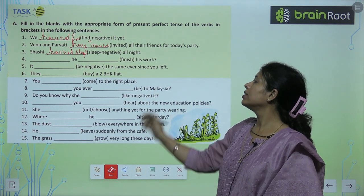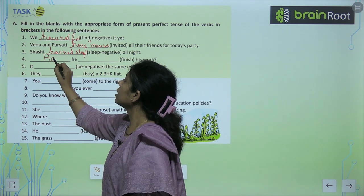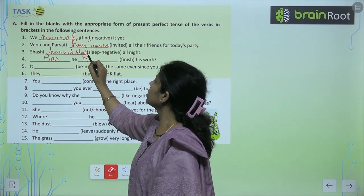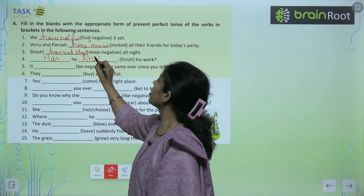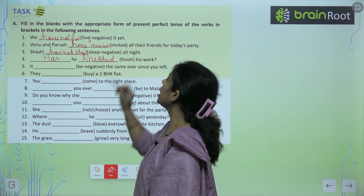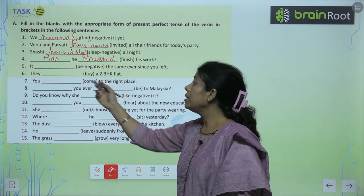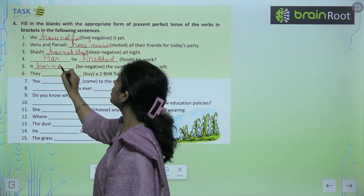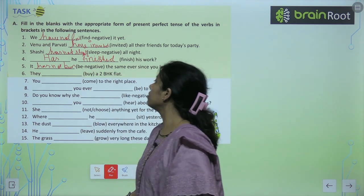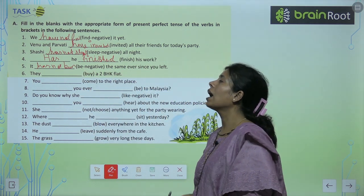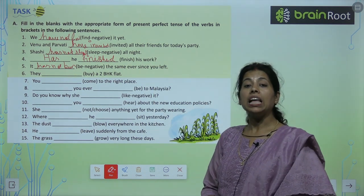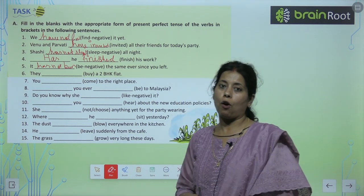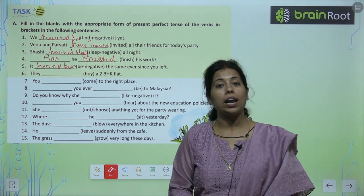He has finished his work. It has not been the same ever since you left. Aise hi aapko in sentences ko verb ke saath has, have — ya agar negative hai to has/have not — plus third form of verb se correct karna hai.